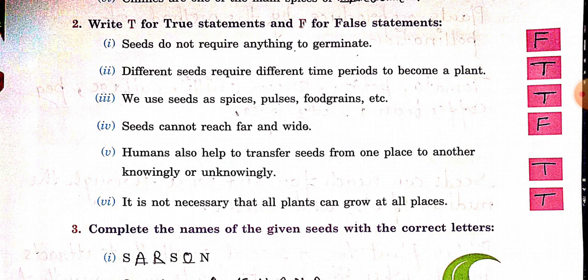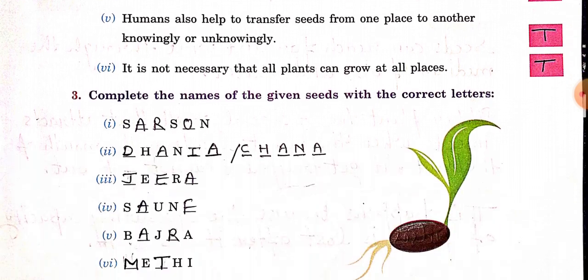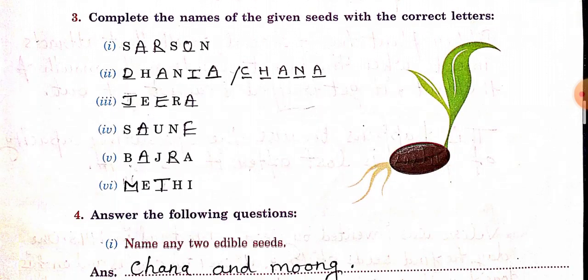Sixth: it is not necessary that all plants can grow at all places — True. Now the third question is: complete the names of the given seeds with the correct letters.